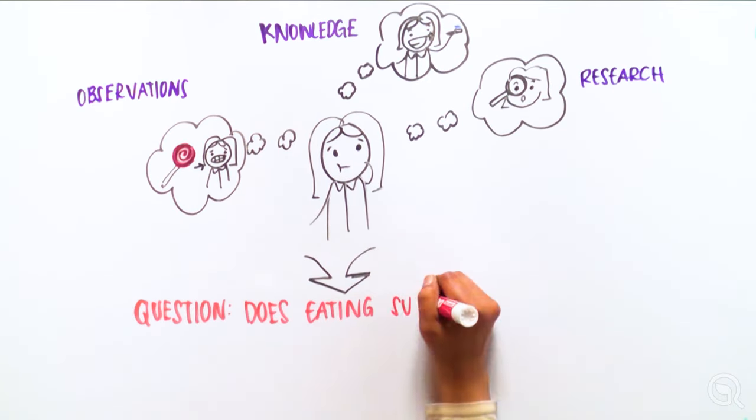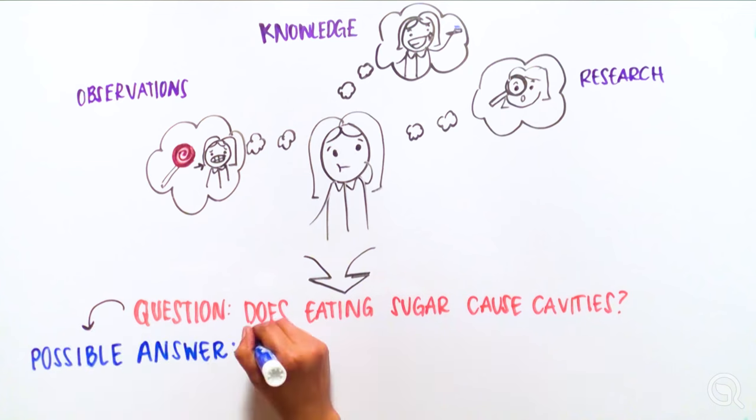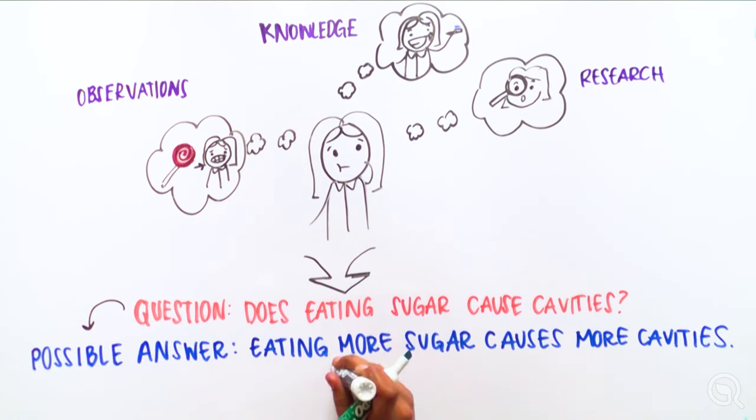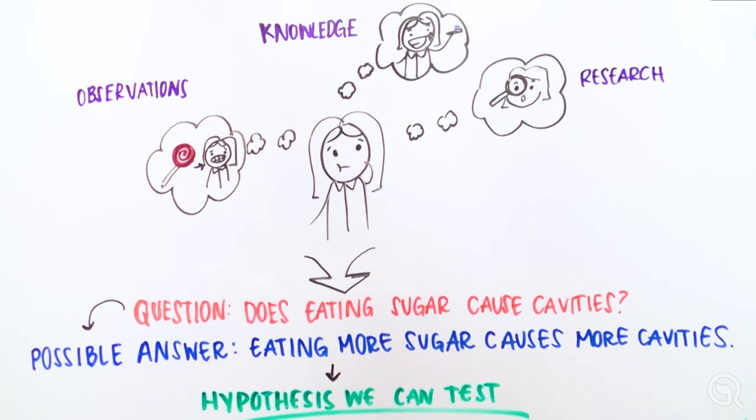Based on our scientific question, one possible answer could be: eating more sugar causes cavities. This is a hypothesis we can test to help explain what causes cavities.